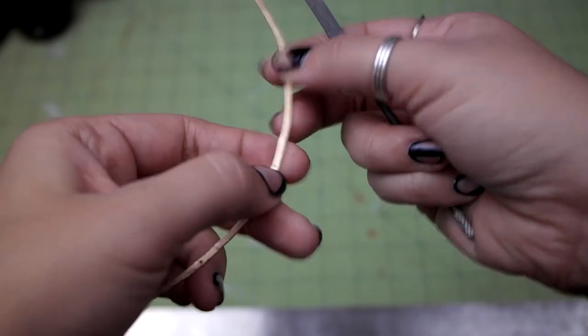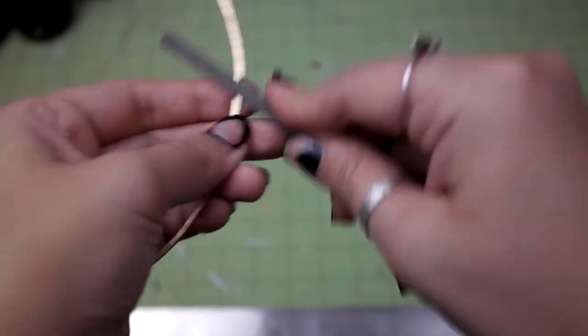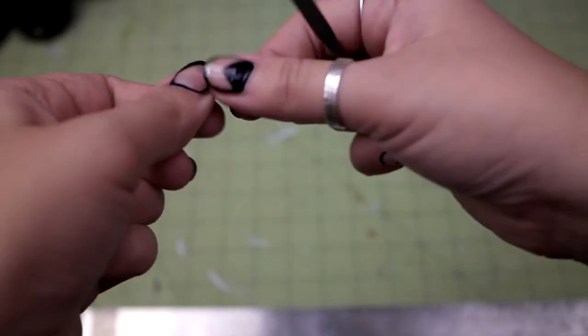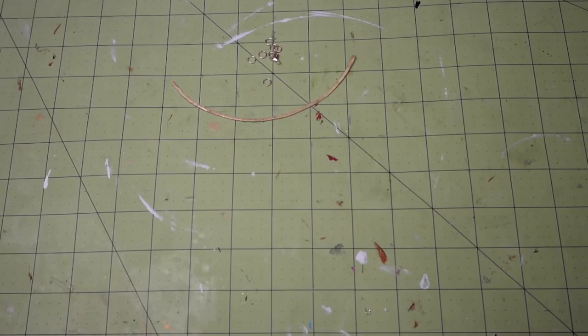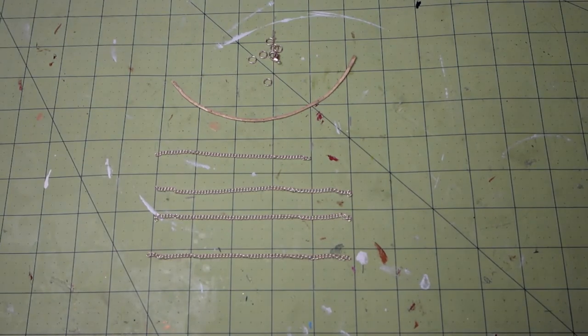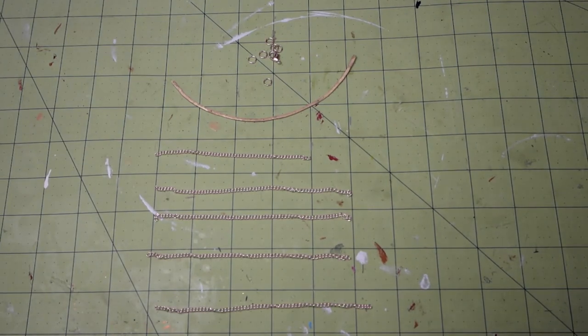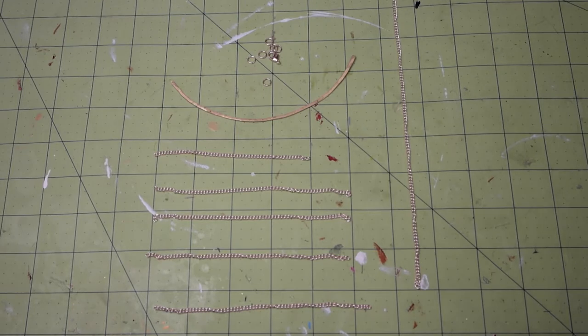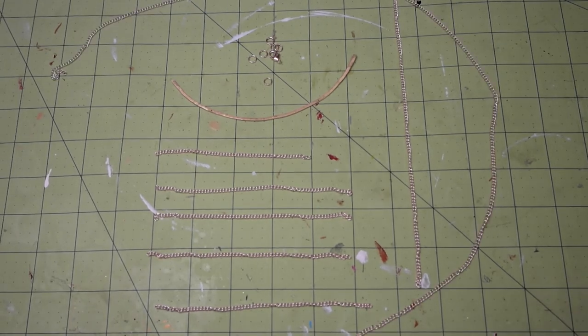Use your file to file down the burrs of metal around each hole. Now it's time to cut all the chain to size. You'll need to cut one four inch piece, three five inch pieces, one five and a half inch piece, one ten inch piece, and one twenty four inch piece.